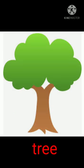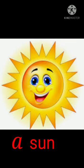This is a picture of tree. The starting letter of tree is T, which is a consonant. So we will use A — a tree. This is a picture of sun. The starting letter of sun is S, which is a consonant. So we will use A — a sun.